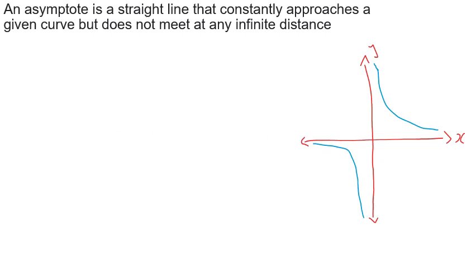The most important thing when it comes to rectangular hyperbolas is an asymptote, and you need to know what an asymptote is. It's a straight line that constantly approaches a given curve but does not meet it at any infinite distance. We underline two phrases: 'does not meet' and 'any infinite distance.' So if the two lines do not meet, there will be no intersection — we do not have an x-intercept and we do not have a y-intercept, as we can see from our rectangular hyperbolas on our graph.